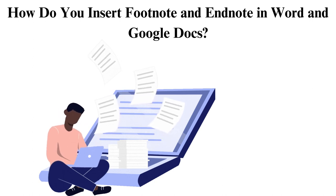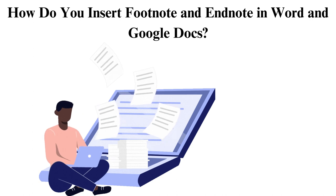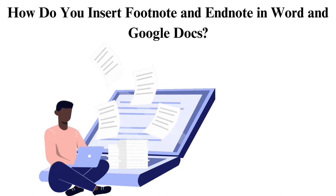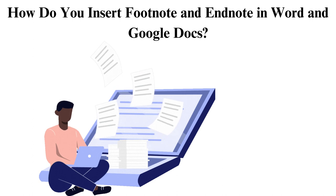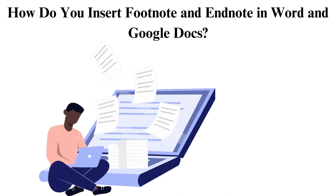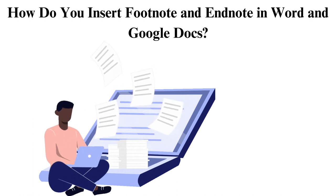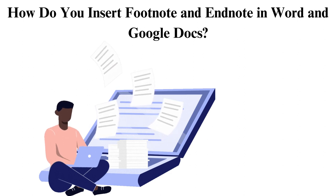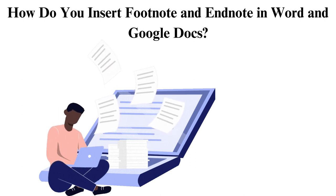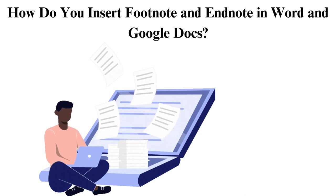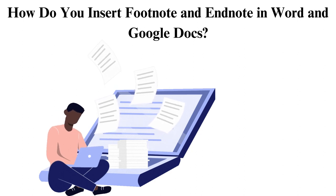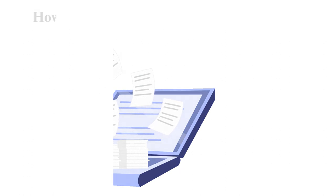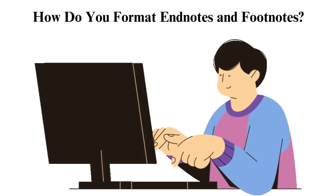Adding footnotes and endnotes in a Google Doc is as follows. Click where you want to place your footnote. Find the Insert tab and choose 'Insert footnotes.' Two numbers will appear in the main text and at the bottom of the page. Write your citation and the additional information.